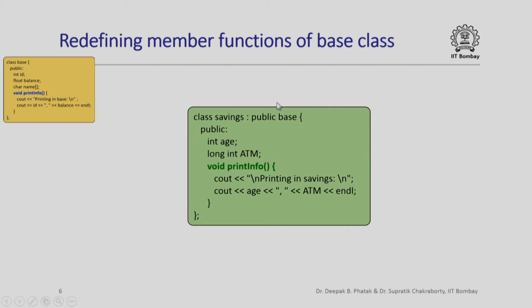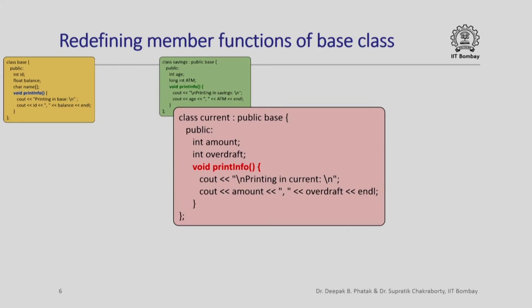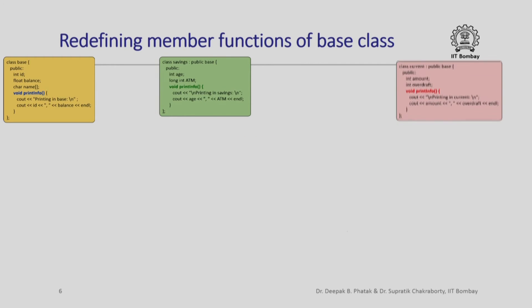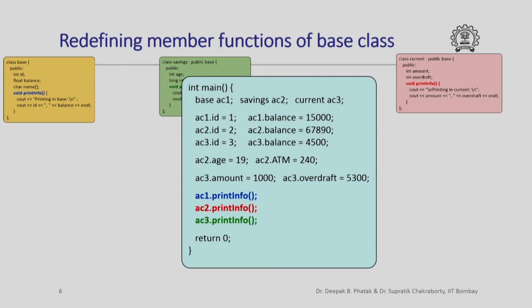These two data members are not present in the base class; they are additional data members in the derived class. The current class is also derived from the base class. It has two additional data members amount and overdraft, and the member function print info for the current class prints 'printing in current' and outputs the value of those two additional data members. Now that we have these class definitions and the definitions of print info in these three classes, we want to see what is going to happen when we execute this program.